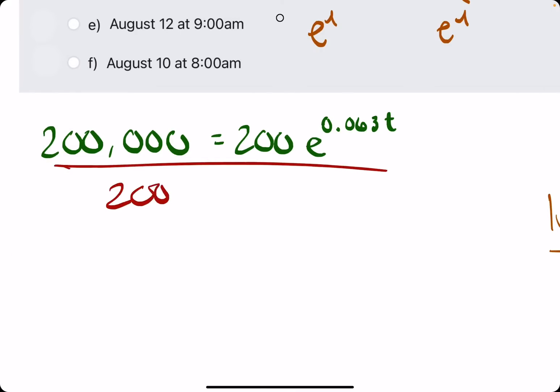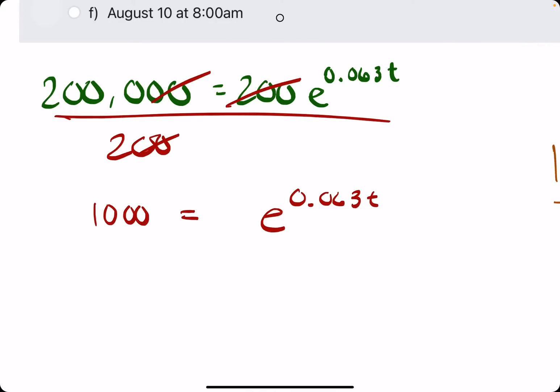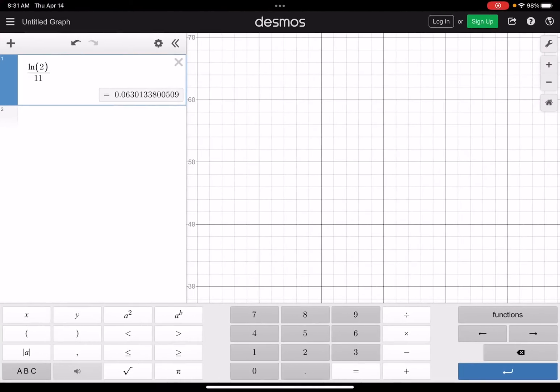Same exact solution process. We divide by 200 to cancel it here. And dividing 200,000 by 200, I want to say that's just 1,000. We get rid of some zeros. 2,000 divided by 2 is 1,000. That's pretty good. So we have 1,000 equals E to the 0.063 T. We can take the natural log of both sides, eliminating the E there. And then we're just left with this. So we can divide by 0.063 on both sides to get T by itself. LN of 1,000 divided by 0.063 and we get 109.6.